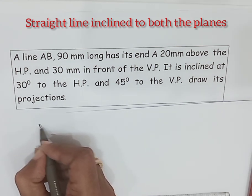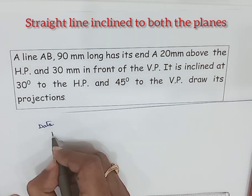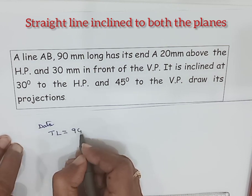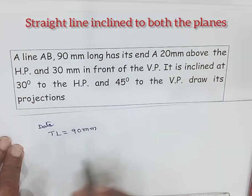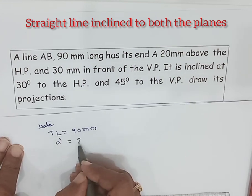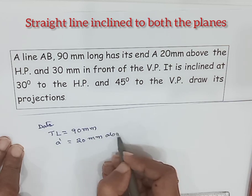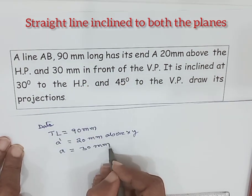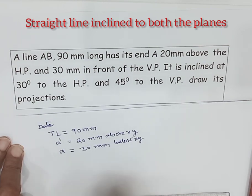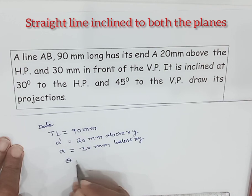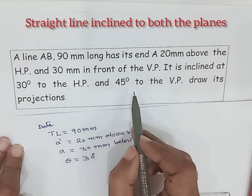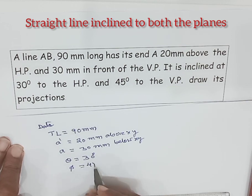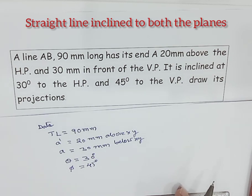What is the data? True length is 90mm. End A is 20mm above HP, so front view of A is 20mm above XY. And 30mm in front of VP, so top view of A is 30mm below XY. The line is inclined at 30 degrees to the HP — that is true inclination theta equals 30 degrees. True inclination with VP is denoted by phi, that is 45 degrees. This is the given information extracted from the problem.